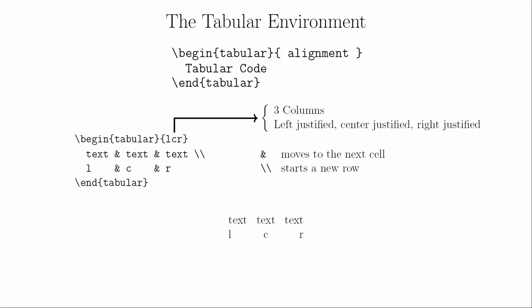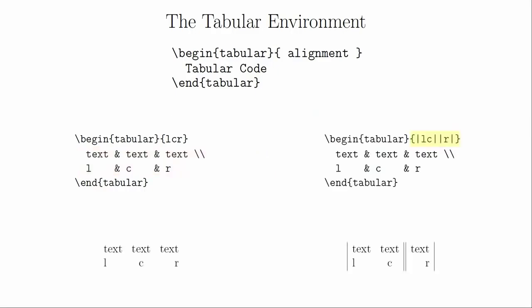The output fits the structure we created: three columns, the first left justified, the next centered, and the last right justified. Extra spaces to make the columns line up in the code aren't necessary, but they make the code more readable. From here, we can start to get fancier with the table. If we wanted to add vertical lines to separate the columns, we would put vertical bars into the alignment definition. We can also get double lines by putting two vertical bars between the columns. The vertical bars will only be drawn if you have cells that require them — if you end a row early without creating blank cells, the vertical lines will have gaps.